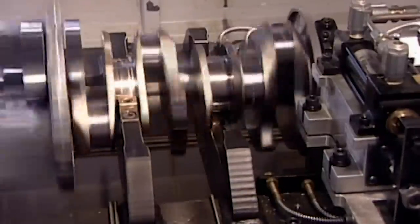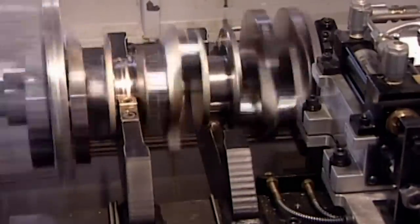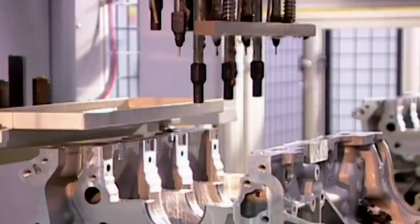Now workers balance the crankshaft. If it's off kilter, the engine will vibrate. A computer analyzes the spin and determines whether they need to drill out metal at certain points to achieve equilibrium.